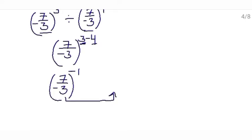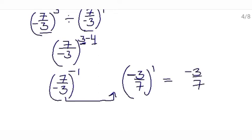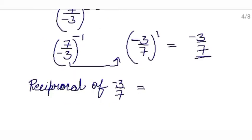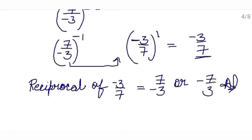So we will make its power positive. To make its power positive we will write the reciprocal of the base. Reciprocal of the base will be minus 3 upon 7, now the power will become positive. And this is also equal to minus 3 upon 7, because the power is 1. But this is not our answer, because in the question they were asking for the reciprocal. So now we will write its reciprocal: reciprocal of minus 3 upon 7 is 7 upon minus 3, or you can say minus 7 upon 3. This is your answer.